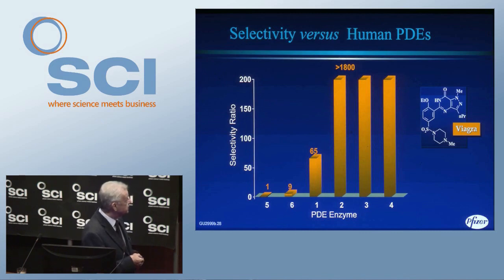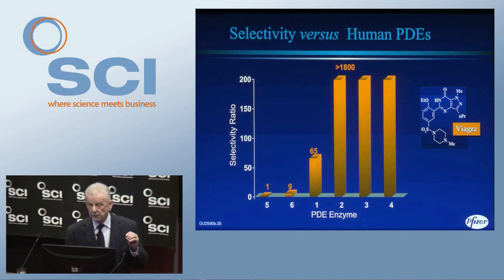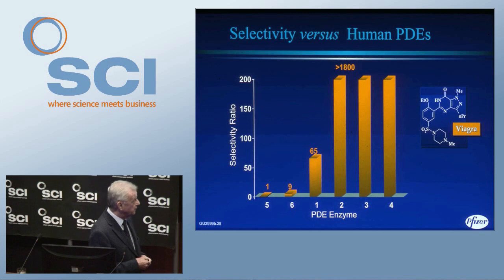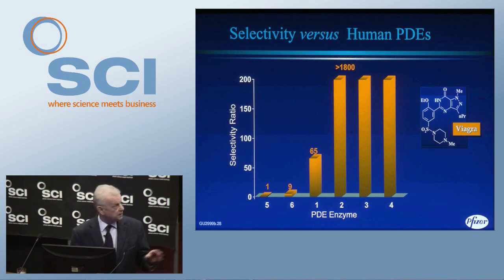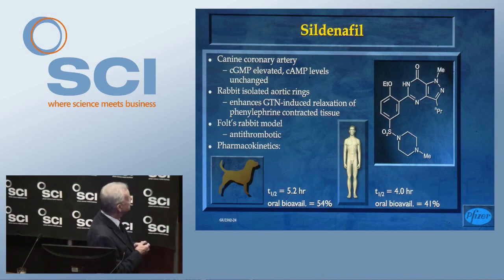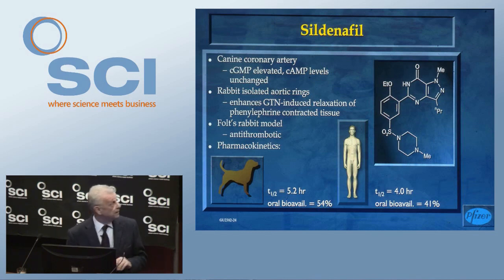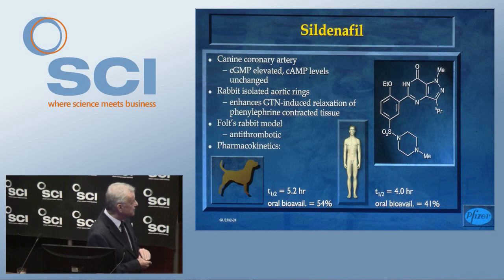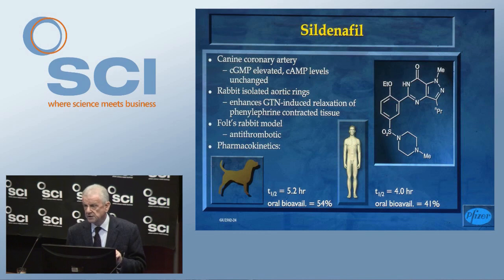This data shows selectivity: PDE5 is what we want to inhibit; there's a 10-fold ratio over PDE6, a good ratio over PDE1, and PDE3 is in the heart — if you inhibit PDE3 in the heart you'll get arrhythmia, so we don't want that. So we have a compound with good selectivity for PDE5. The pharmacology we carried out encouraged us that we had a compound suitable for cardiovascular application: it did relax smooth muscle, it did elevate cGMP, and it worked in the antithrombotic model. It had a reasonable half-life, but since this was a novel mechanism of action, we weren't trying to get once-daily just yet — we were trying to find out if the compound worked at all.